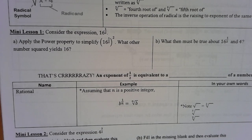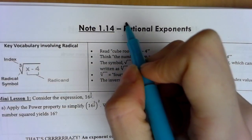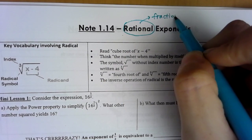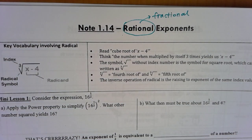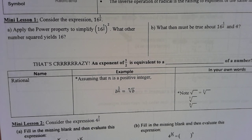Welcome to lesson 1.14, rational exponents. When we say rational in algebra 2, we're actually referring to fractional — it's a fancy word for fractional. Let's take a look at mini lesson 1. Consider the expression 6 to the half power. We discussed negative exponents and different exponent properties, but we haven't talked about what it means to have fractional exponents.